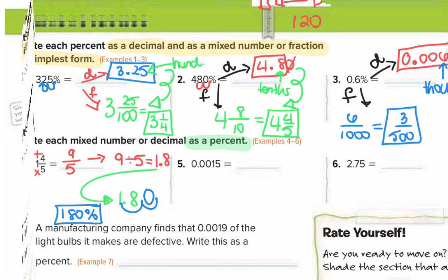Number five. Number five is already a decimal, so we basically skip this whole step. It's already a decimal, so all we have to do to make it a percent is move it two to the right. That's 0.15 percent. It's a percent that has a decimal in it, but it's still a percent.